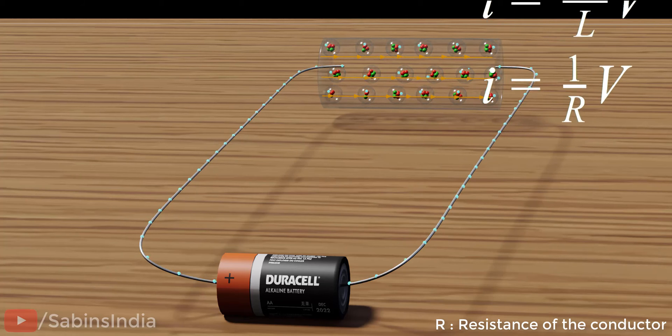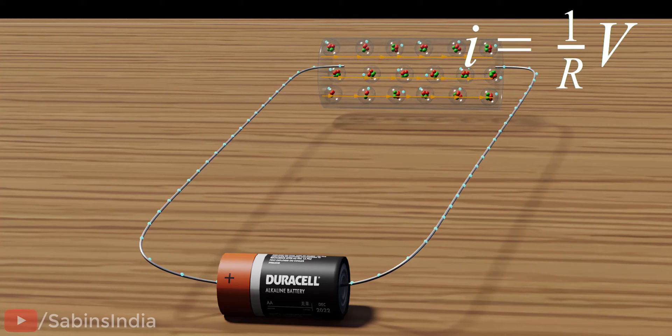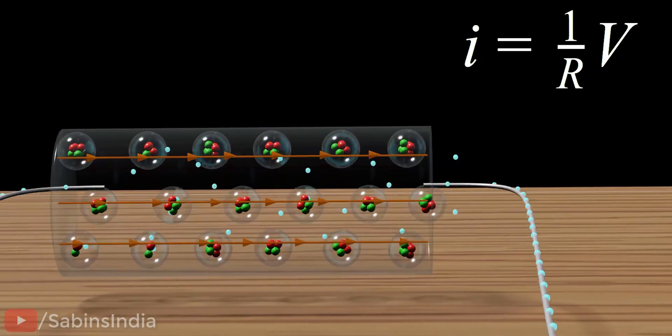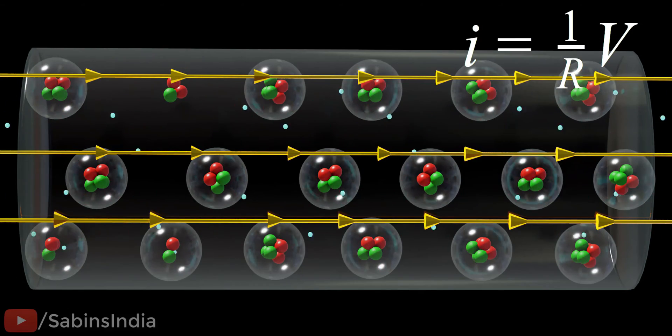But remember, here we used the laws of classical physics to derive the drift velocity. Strictly speaking, the behavior of electrons in a metal is a quantum mechanics phenomenon. By using the classical physics method, we derived highly compromised results, yet it works well in most of the cases.